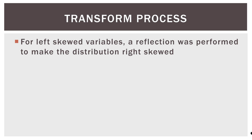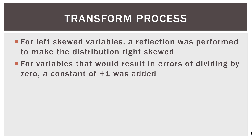For left skewed variables, a reflection was performed to make the distribution right skewed. This is similar to flipping a picture on your phone — maybe the text on your shirt is backwards and you flip it so the text reads correctly. When we have all of our distributions going in one direction, they're a little bit easier to work with. But of course, when we transform them back, we have to keep in mind that we flipped them. For variables that would result in errors like dividing by zero or problems with logarithms, a constant of one was added. This is common practice for transforming variables, and I will go into that in more depth in future videos.